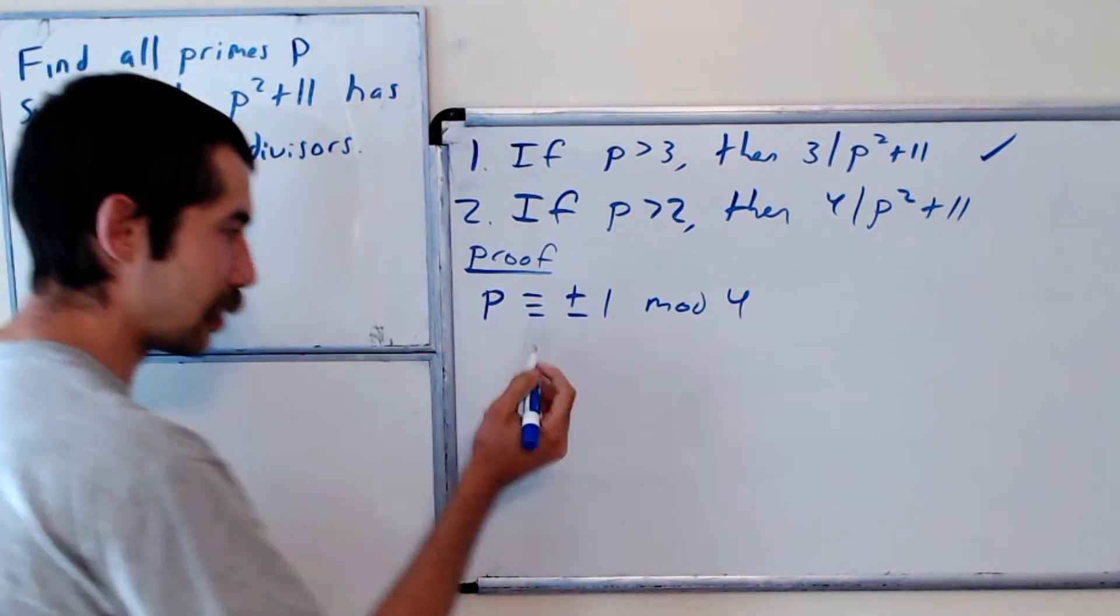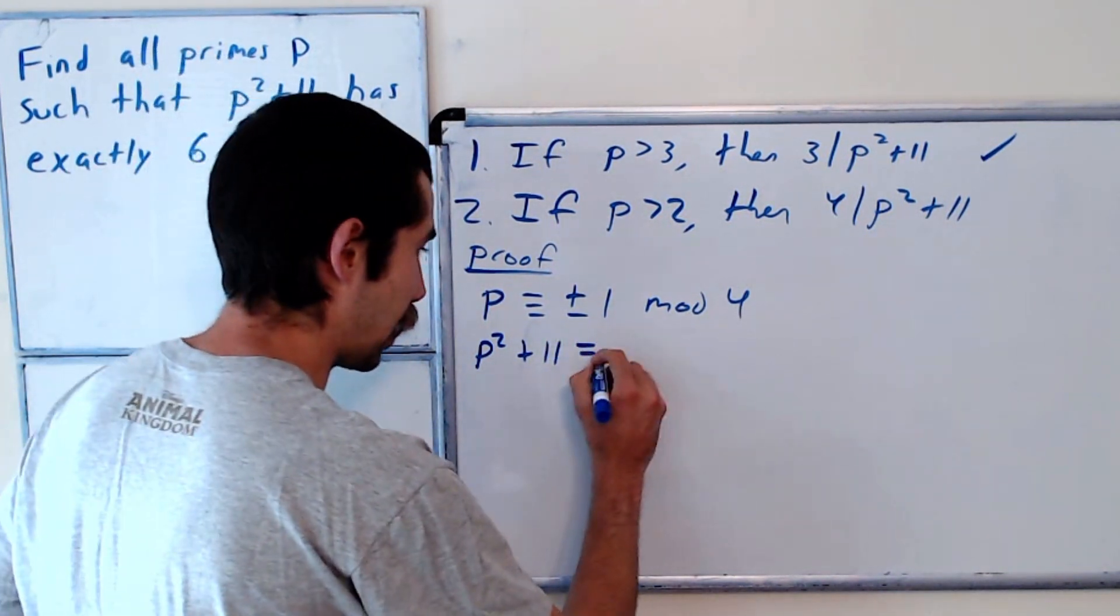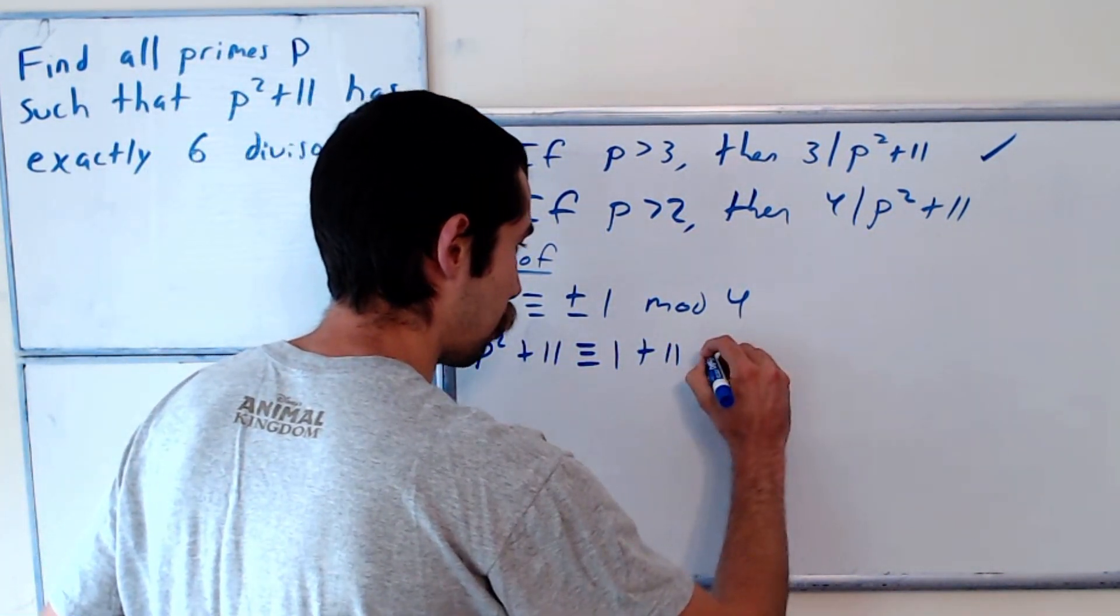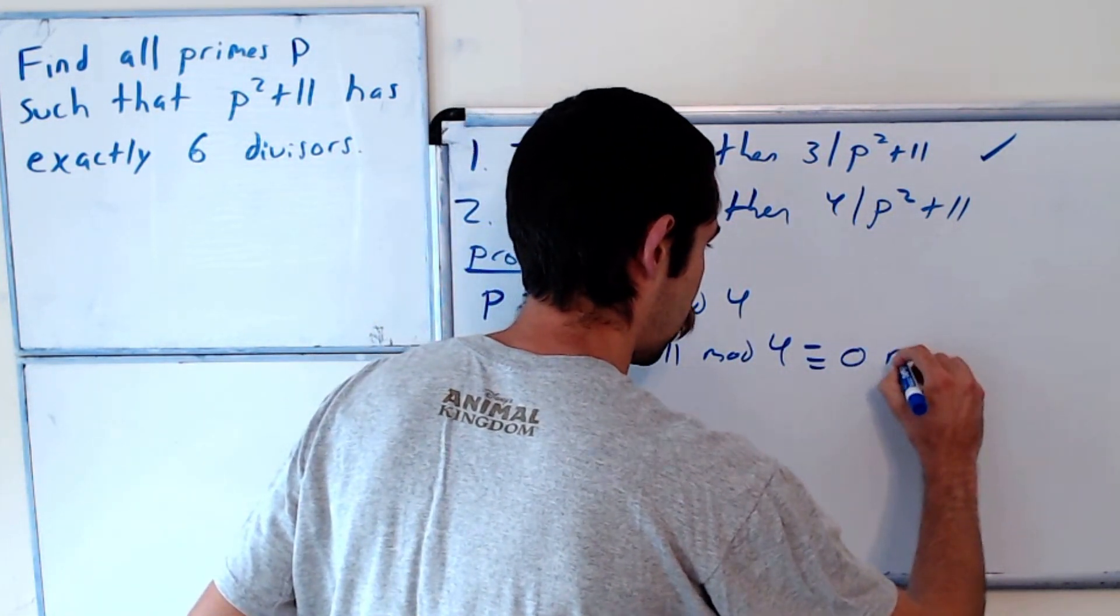Okay, and so again, same argument. Square it, and add 11, we get 1 plus 11 mod 4, which is equal to 0 mod 4.